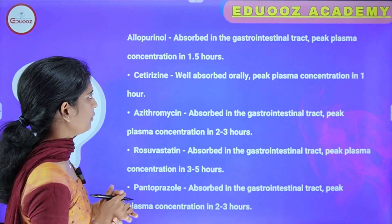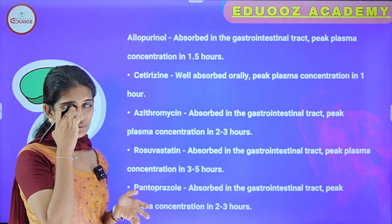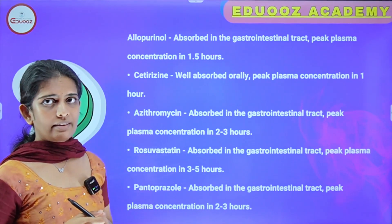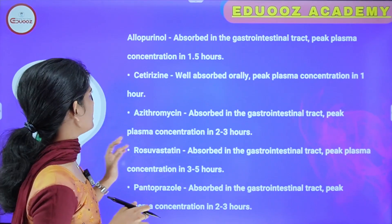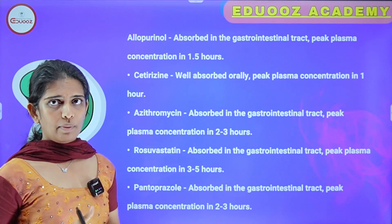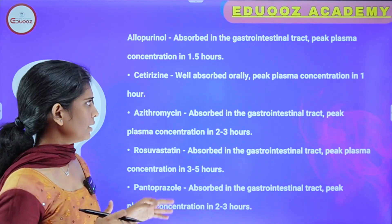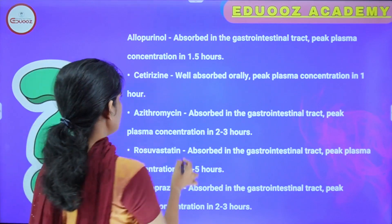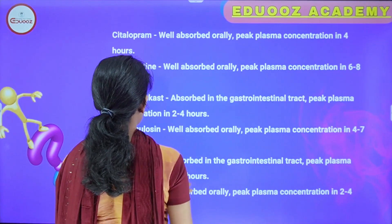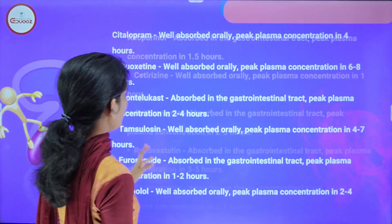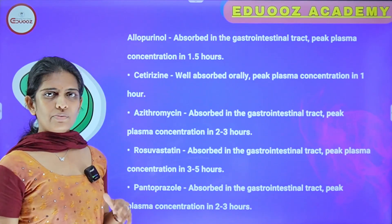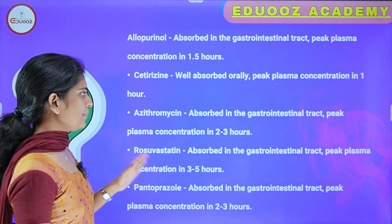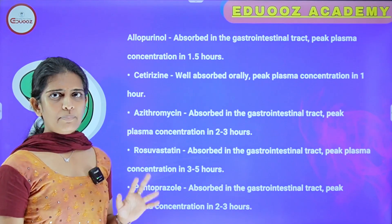Allopurinol is absorbed in the gastrointestinal tract and peak plasma concentration is in 1.5 hours. Cetirizine is well absorbed orally with peak plasma concentration in 1 hour. Azithromycin is absorbed in the gastrointestinal tract with peak plasma concentration in 2 to 3 hours.